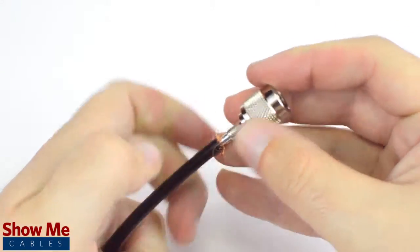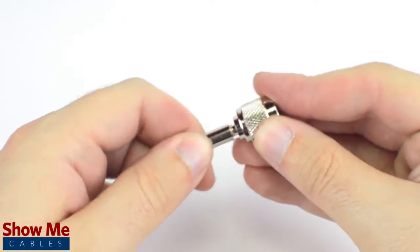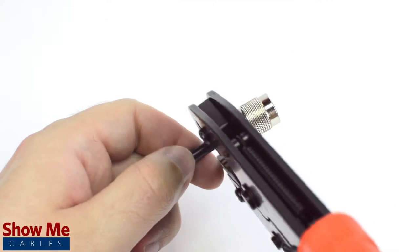Then slide the ferrule up to the base of the connector folding the shield with it. Crimp the ferrule under the outer jacket to complete termination.